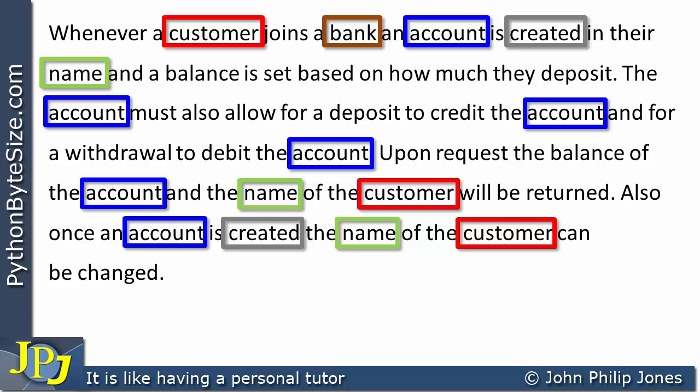If I continue through the specification, I then come to 'balance', which I think is important, and it does appear elsewhere. Now, what is balance? Is it a verb? No — in the context we're considering, that's a noun. It's going to be the balance of the account of a particular customer, i.e. how much money they have in the bank.